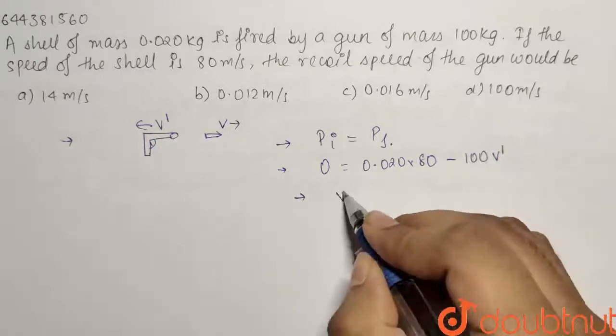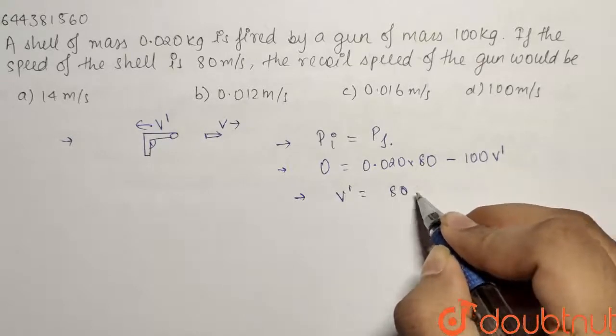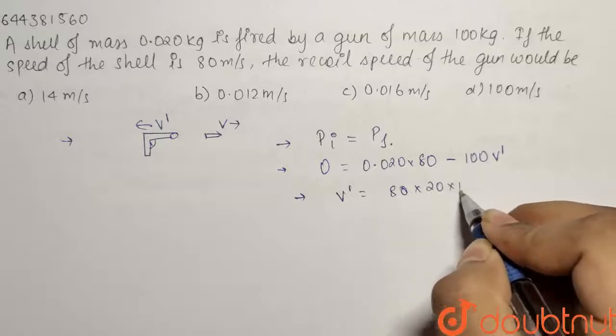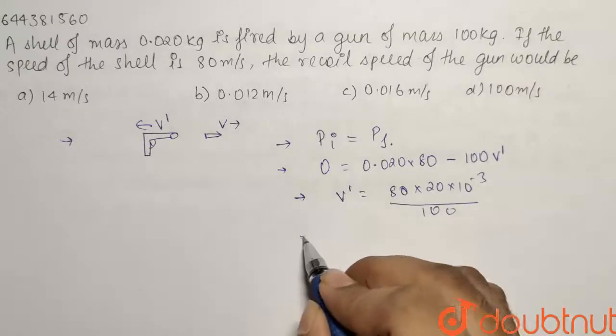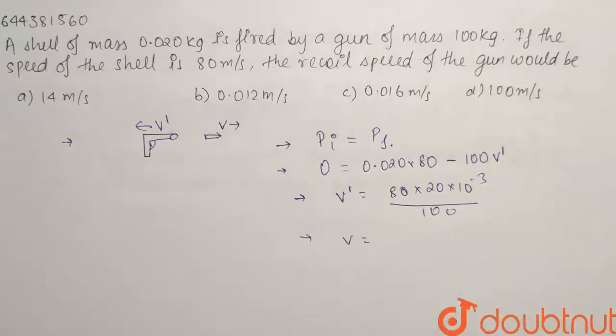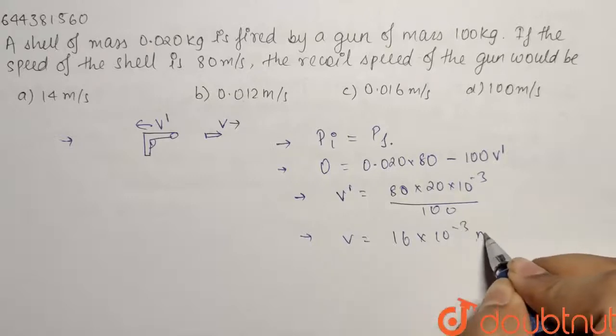So from here what we find out, our V dash comes out to be equals to 80 multiplied by 20 multiplied by 10 to the power minus 3 divided by 100. So from here what we get, our velocity comes out as 16 multiplied by 10 to the power minus 3 meter per second.